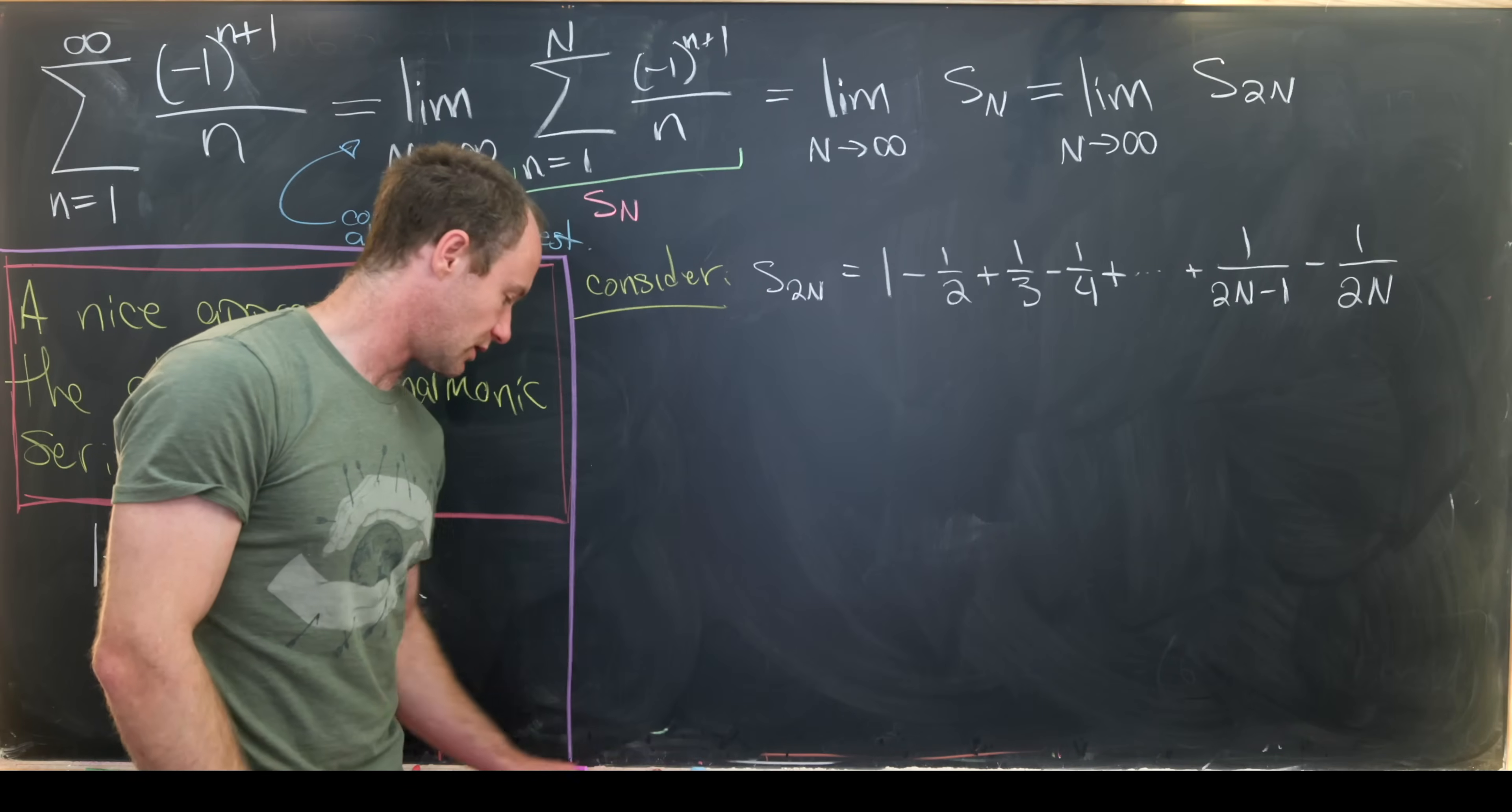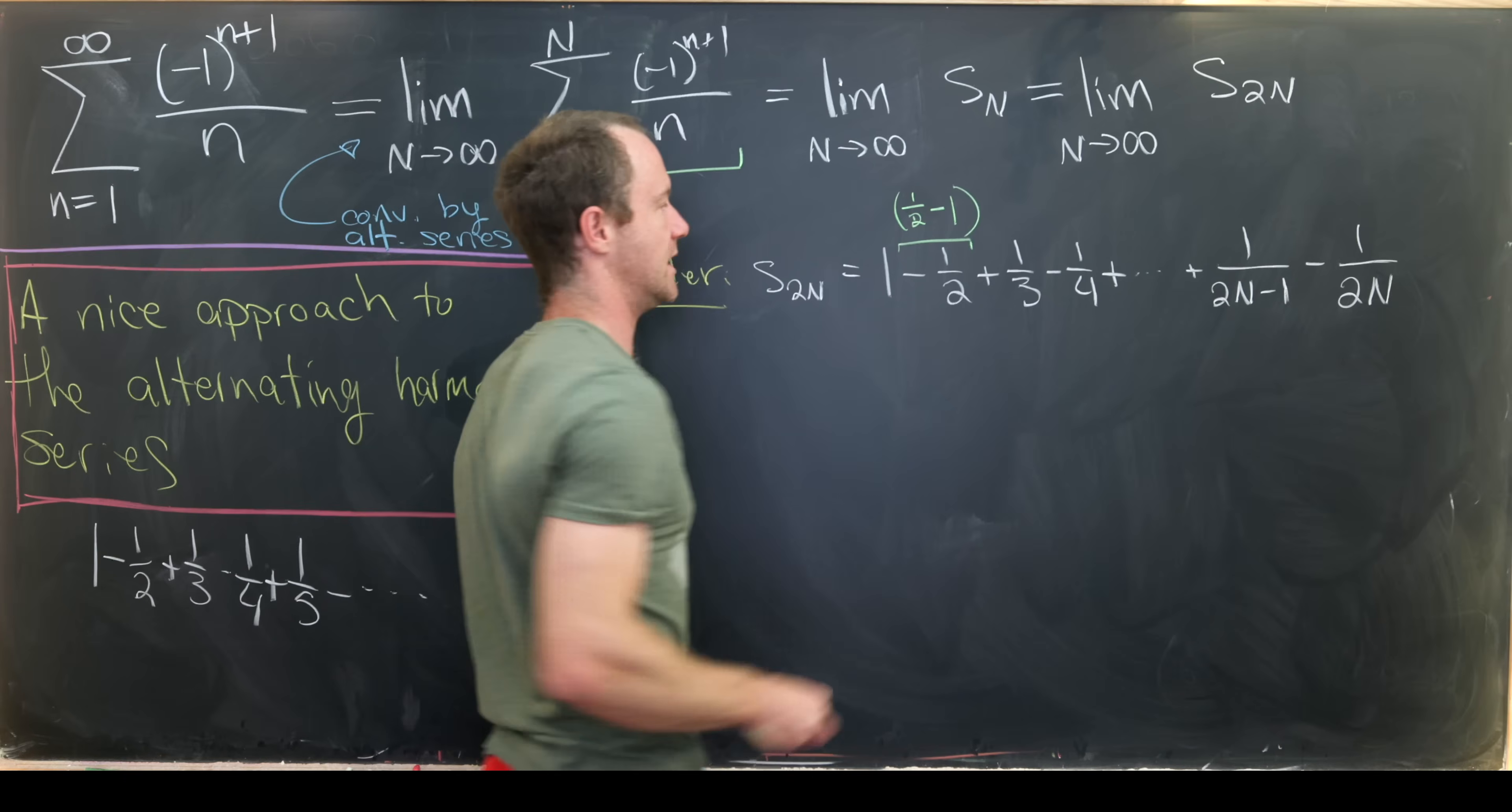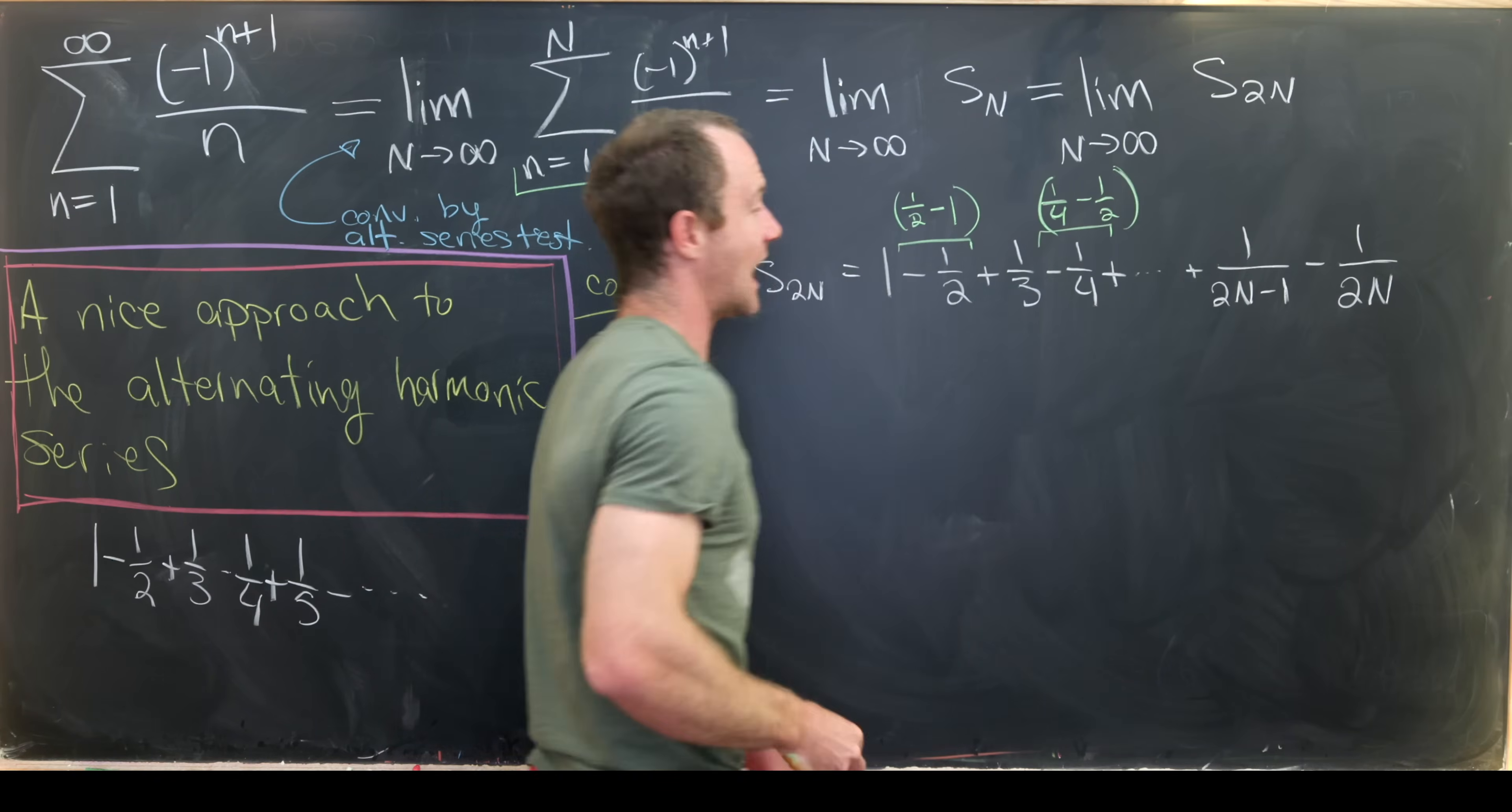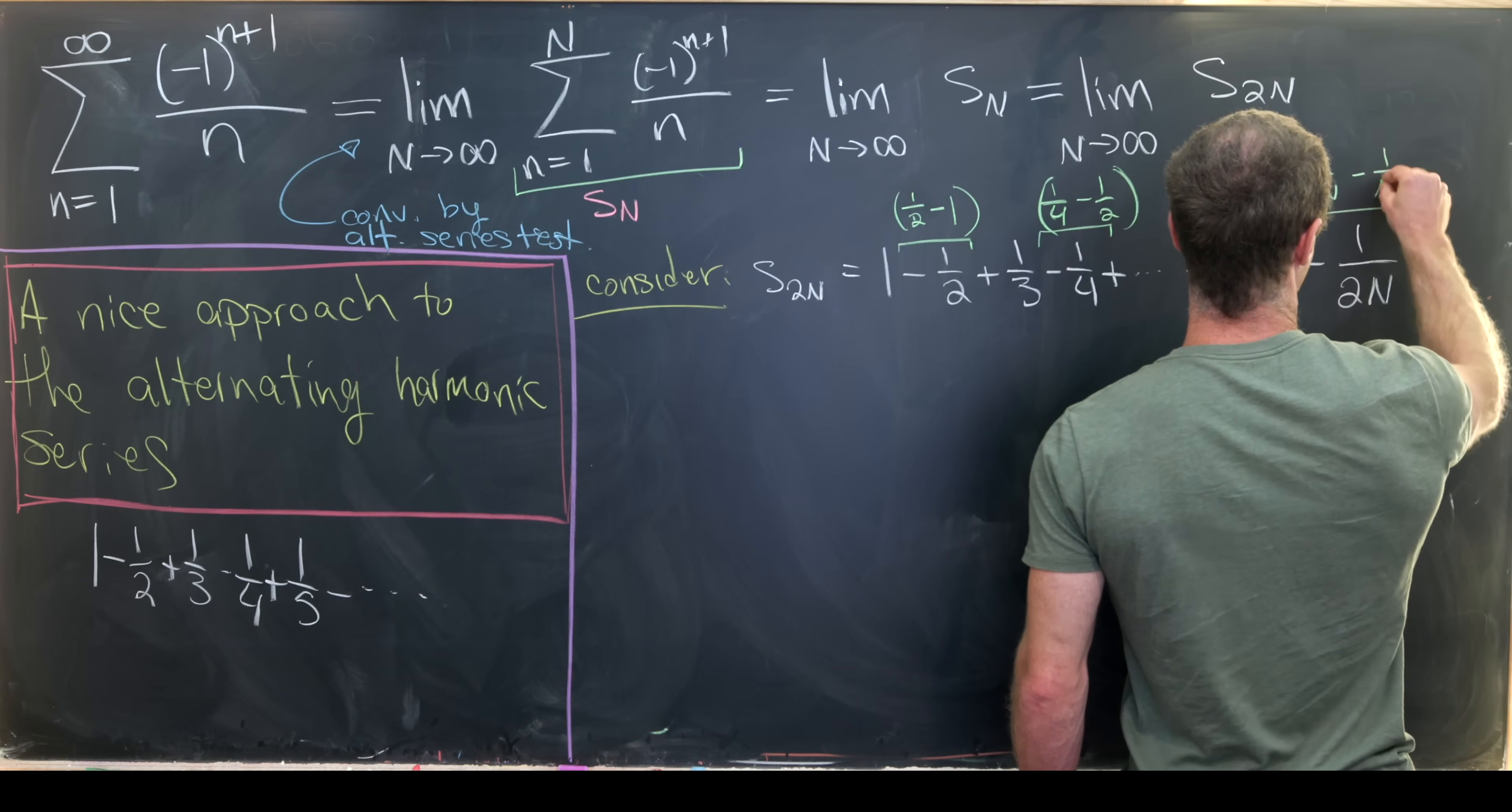So now I'm going to take all of these negative terms and rewrite them a little bit. So I'll take this negative 1/2 and I'll write it as 1/2 minus 1. So it's like plus 1/2 minus 1. And then I'll take this minus quarter and I'll do something pretty similar here. I'll write this as 1/4 minus 1/2. And then I'll continue to do that until I get down to this last one right here. And I'll write this negative 1/(2N) as 1/(2N) minus 1/N.